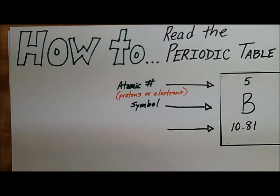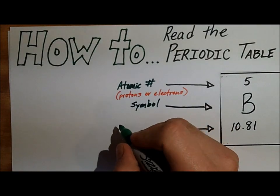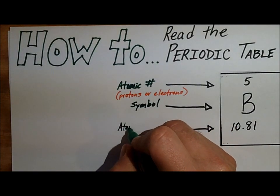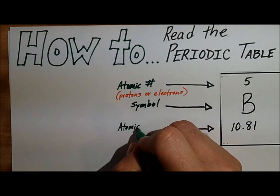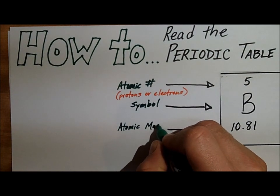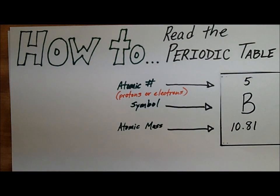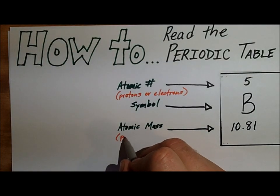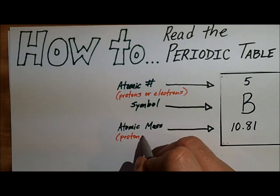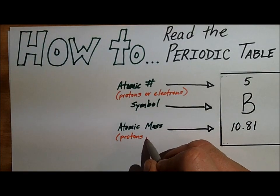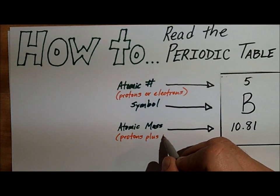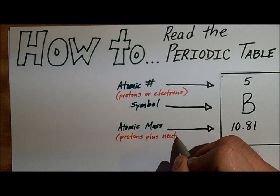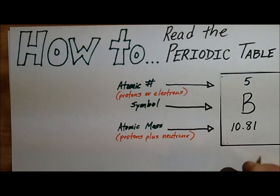And then at the bottom you have the atomic mass. The atomic mass is made of protons plus neutrons.